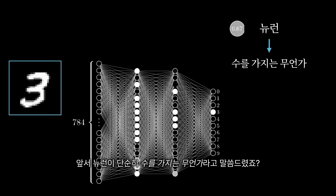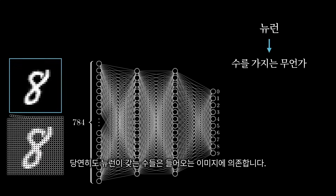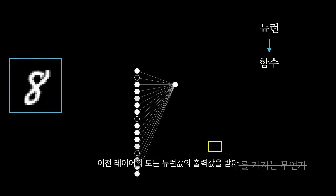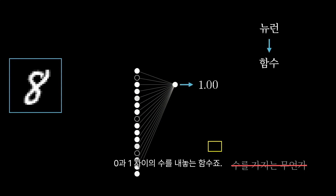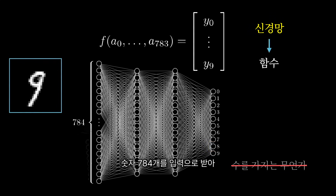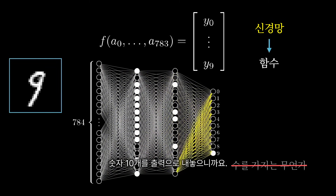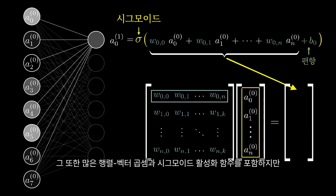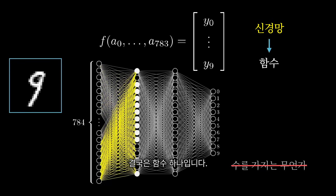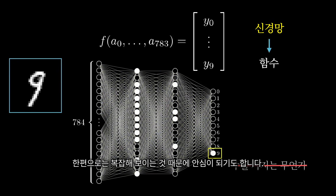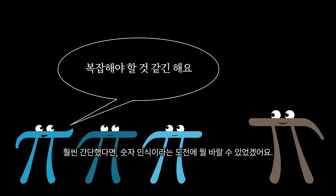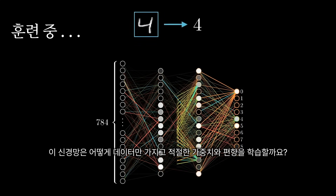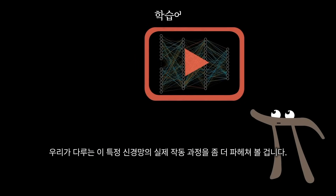Remember how earlier I said these neurons are simply things that hold numbers? Well, of course, the specific numbers that they hold depends on the image you feed in. So it's actually more accurate to think of each neuron as a function — one that takes in the outputs of all the neurons in the previous layer and spits out a number between 0 and 1. Really, the entire network is just a function, one that takes in 784 numbers as an input and spits out 10 numbers as an output. It's an absurdly complicated function, one that involves 13,000 parameters in the forms of these weights and biases that pick up on certain patterns, and which involves iterating many matrix-vector products and the sigmoid squishification function — but it's just a function nonetheless. And in a way, it's kind of reassuring that it looks complicated. I mean, if it were any simpler, what hope would we have that it could take on the challenge of recognizing digits? And how does it take on that challenge? How does this network learn the appropriate weights and biases just by looking at data? Well, that's what I'll show in the next video, and I'll also dig a little more into what this particular network we're seeing is really doing.